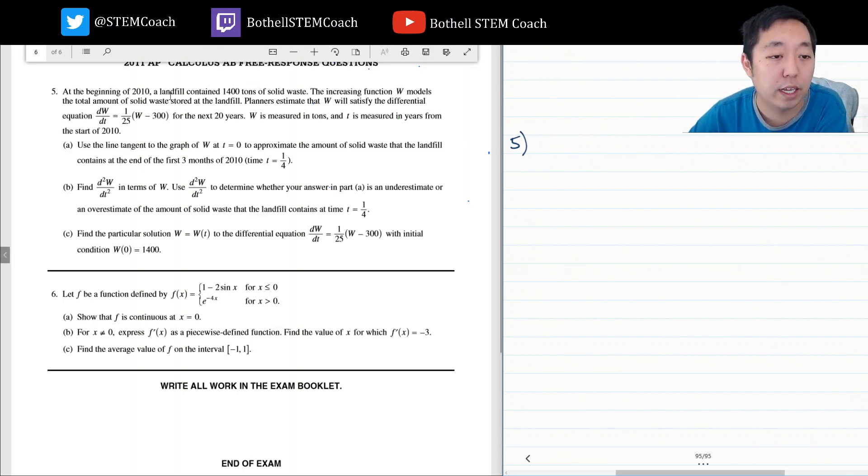At the beginning of 2010, a landfill contained 1,400 tons of solid waste. The increasing function W models the total amount of solid waste stored at the landfill. Planners estimate that W will satisfy the differential equation for the next 20 years, W measured in tons and T measured in years. Use the line tangent to the graph W at T equals zero to approximate the amount of solid waste that the landfill contains at the end of the first three months.